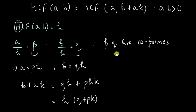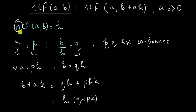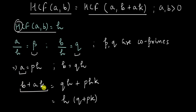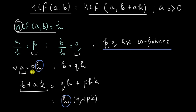Now let us see what we are trying to prove here. We are trying to prove that HCF of A and B is the same as HCF of A and B plus AK. So A is A and the other number is B plus AK. We are trying to prove that they have the same HCF, which should also be H. To prove this, what I need to show is that just like P and Q were co-primes, P and Q plus PK are also co-primes. Because if they are co-primes, then H must be the highest common factor between A and B plus AK.